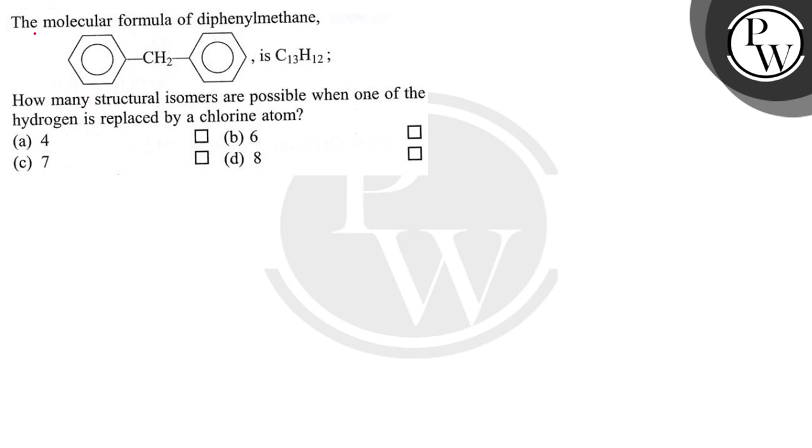Hello, let's read the question. The question says the molecular formula for diphenyl methane is this: how many structural isomers are possible when one of the hydrogen is replaced by chlorine atom? Okay, so let's do the question.